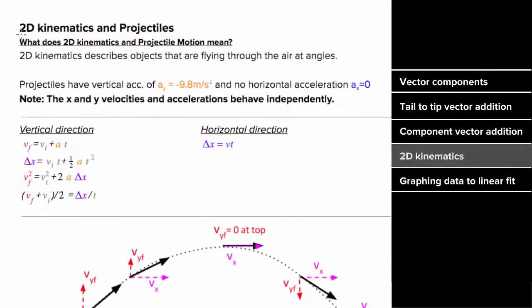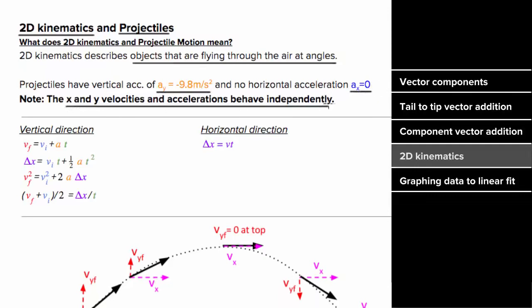How do you deal with 2D kinematics problems? 2D kinematics or projectile problems describe objects flying through the air at angles. For these objects, if there's nothing acting on them besides gravity, their vertical acceleration is going to be negative 9.8, and they will have no horizontal acceleration since gravity doesn't pull sideways. Also, the x and y components behave independently — that means you'll use different equations to solve for vertical components than you will for horizontal components.